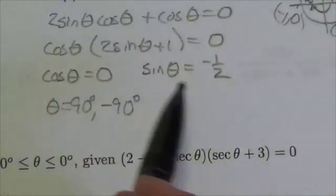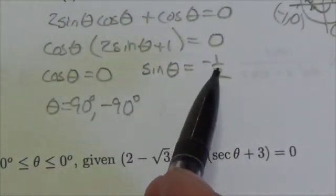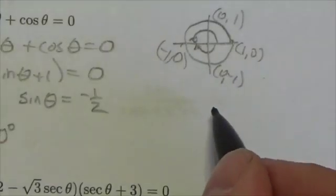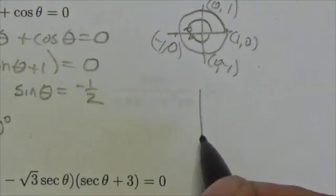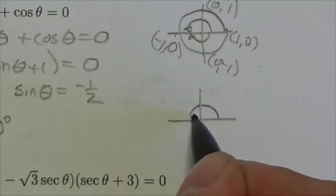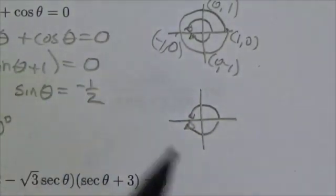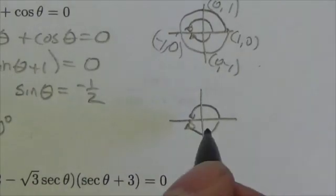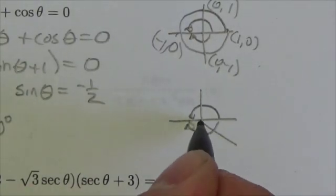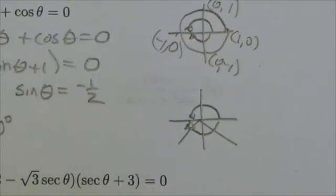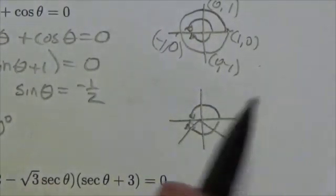Now I take a look at my second factor. Sine of theta is equal to negative 1-half. Now bear in mind that we are talking about a positive-half rotation and a negative-half rotation. And now let's think, sine is negative where? Well, it's negative in quadrants 4 and 3. So those are my two terminal arms. Now notice I'm not even hitting the positive rotation here.